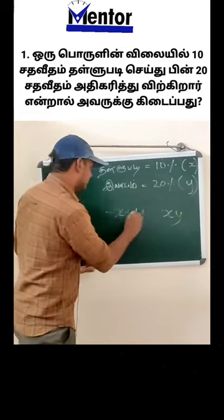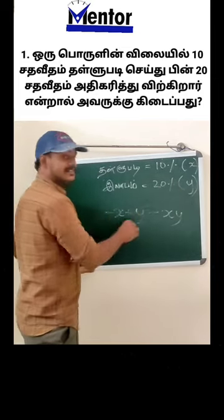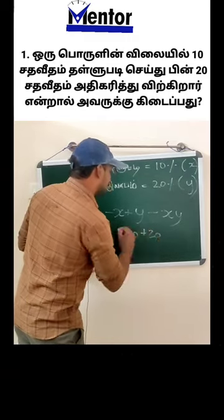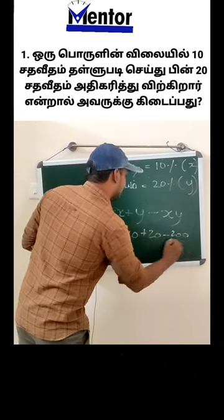Now we have minus here. This is the formula. Then minus 10 plus 20. Let's take here minus 200, 500 by 100.